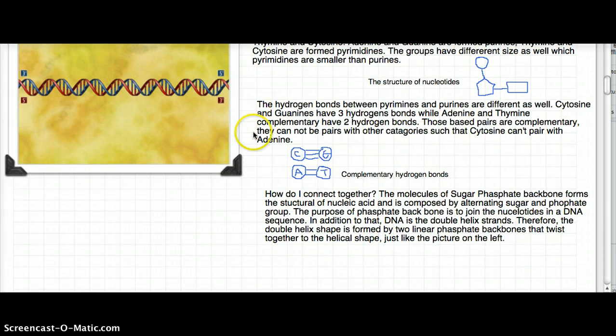How do the DNA strands connect together? The molecule of the sugar-phosphate backbone forms the structure of nucleic acid and is composed by alternating sugar and phosphate groups. The purpose of the phosphate backbone is to join the nucleotides in a DNA sequence.